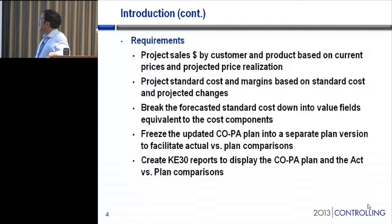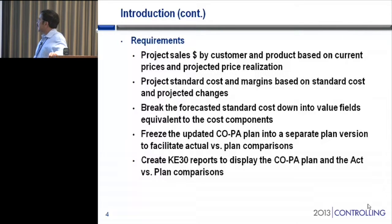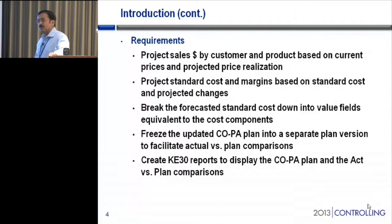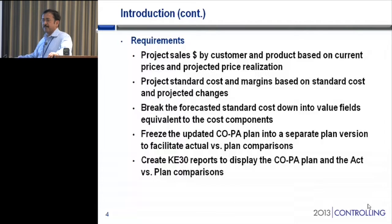We project standard cost and margin based on standard cost and projected changes. We take this cost down into value fields, which can be broken down into the cost component itself — defined all the way down to the cost component level. This means you can determine, based on the volumes you're projecting, what your labor is going to be, what the projected labor will be, and what the different cost component factors are, then work backwards from that.